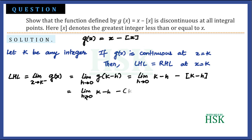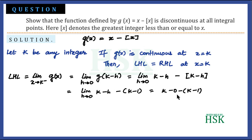So this becomes the limit as h tends to 0 of (k − h) − (k − 1). Applying the limit, this equals k − 0 − (k − 1). The k's cancel, giving a left-hand limit equal to 1.